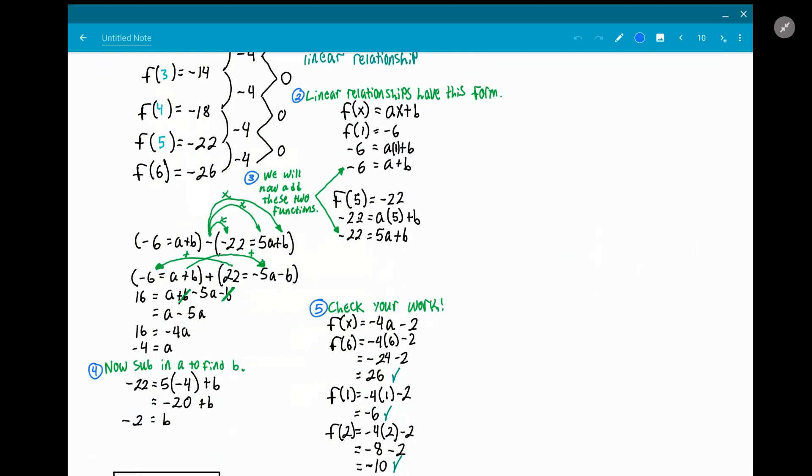And then once you've done that, you can do that with f(5) as well and you get a second equation: -22 is equal to 5a + b. And then what you can do is you can actually add these two functions just like this, and you see I actually distributed this negative into the function so I reversed the signs of everything inside.